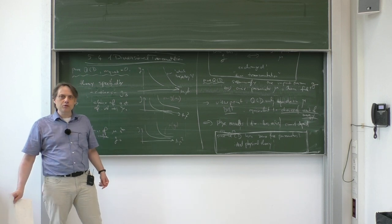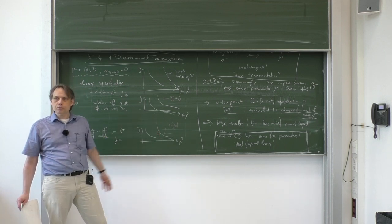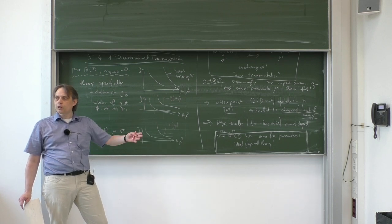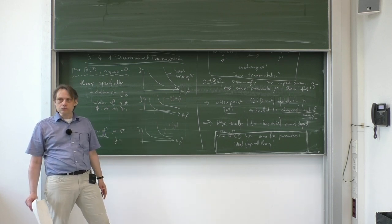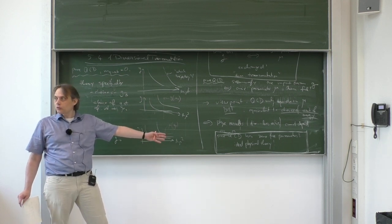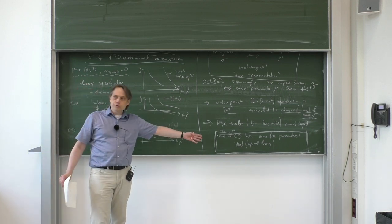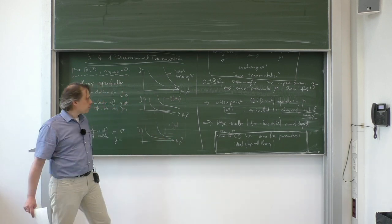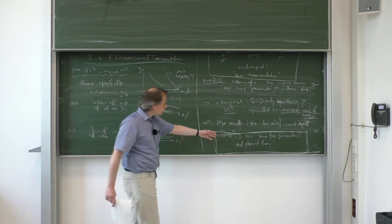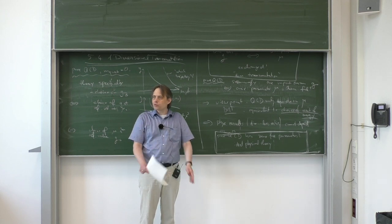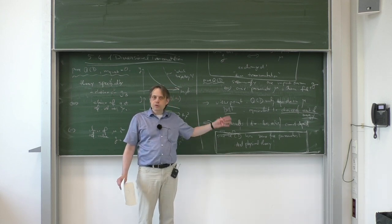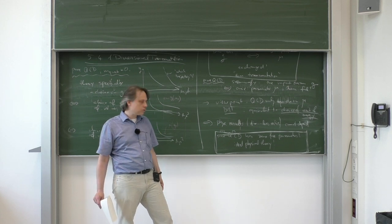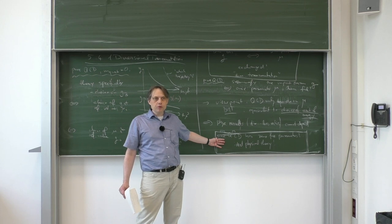With these zero input parameters, QCD predicts a plethora of rich physical phenomena: confinement at low energies, bound states like the proton, neutron, pions, and kaons with certain masses. The non-zero masses of the proton and neutron are predicted by this zero-parameter QCD. It predicts asymptotic freedom at high energies, and phenomena like jets at the LHC. All dimensionless ratios between the masses of different bound states — proton, delta resonance, eta mesons — are predicted by this parameter-free theory.